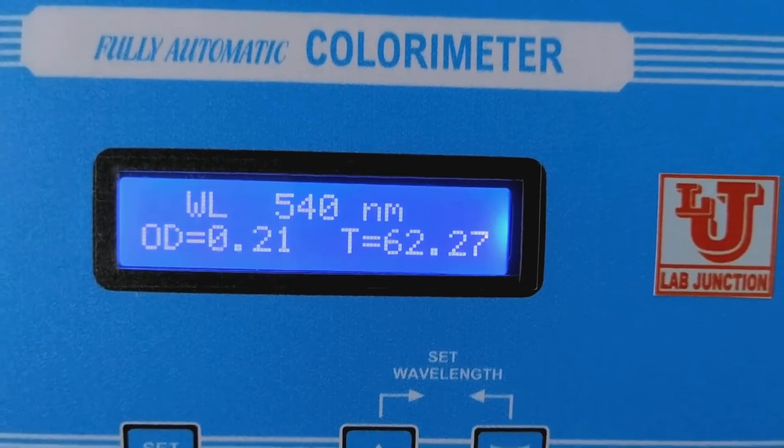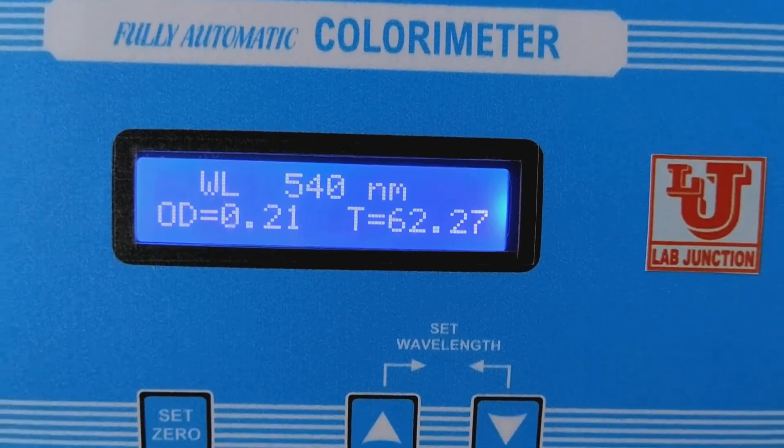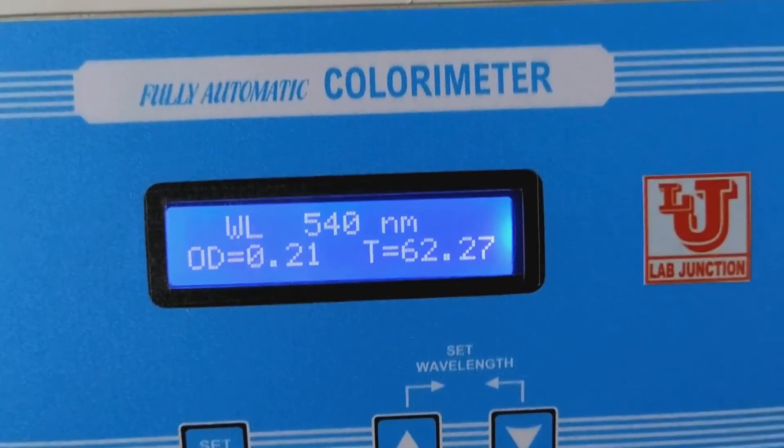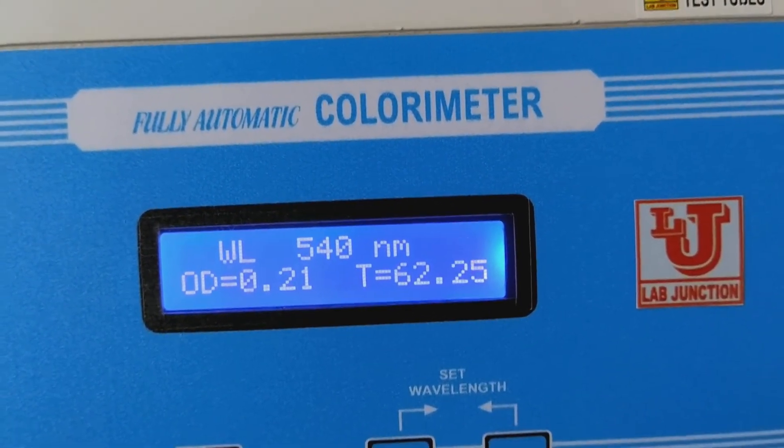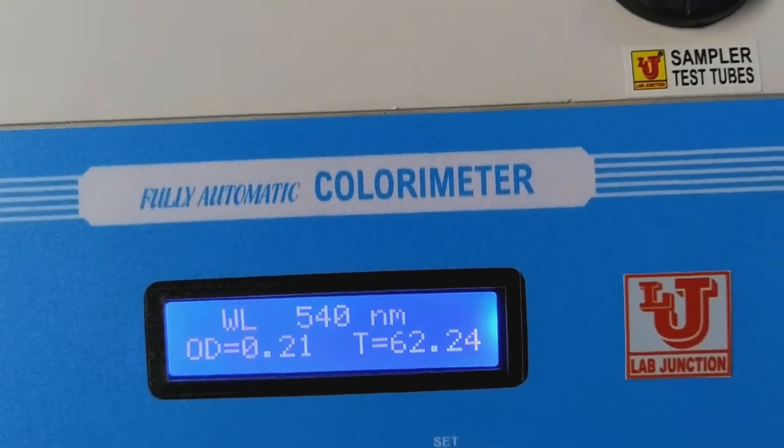For glucose, first set zero from your blank. Then, take reading of your sample. Then, take reading of your reagent and calculate with the help of formula. Thanks.